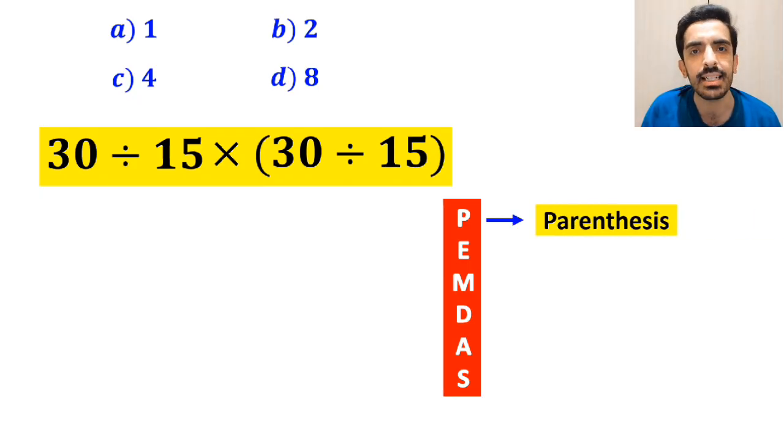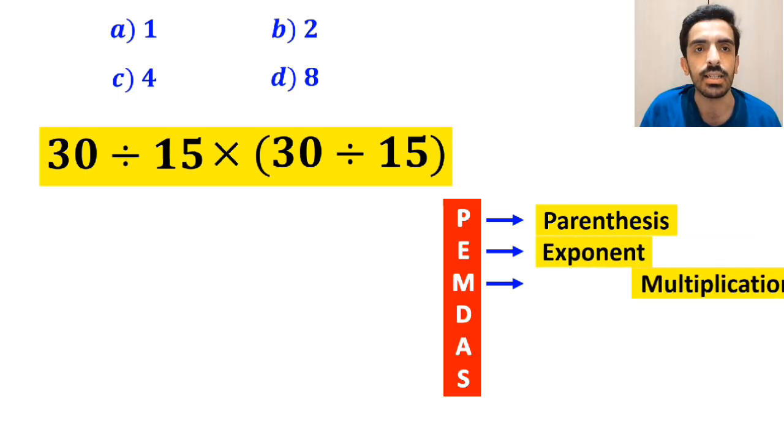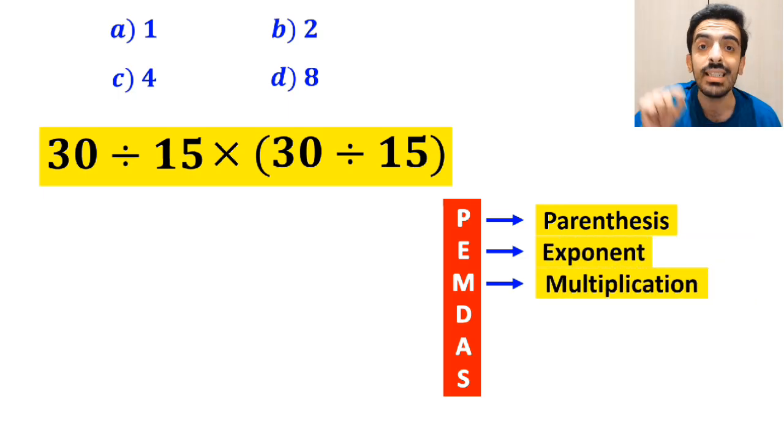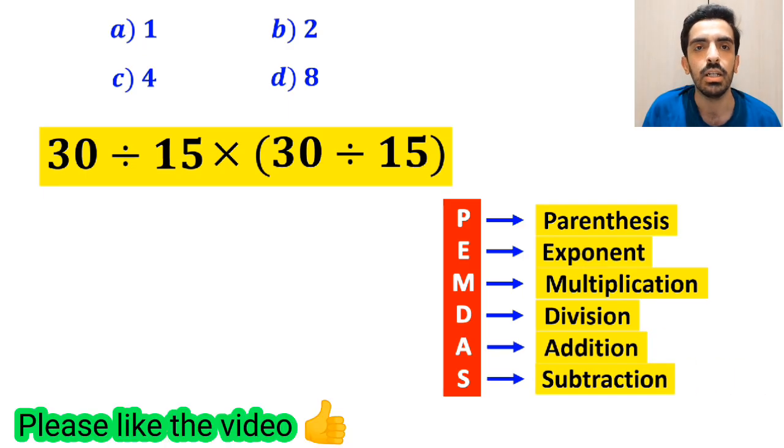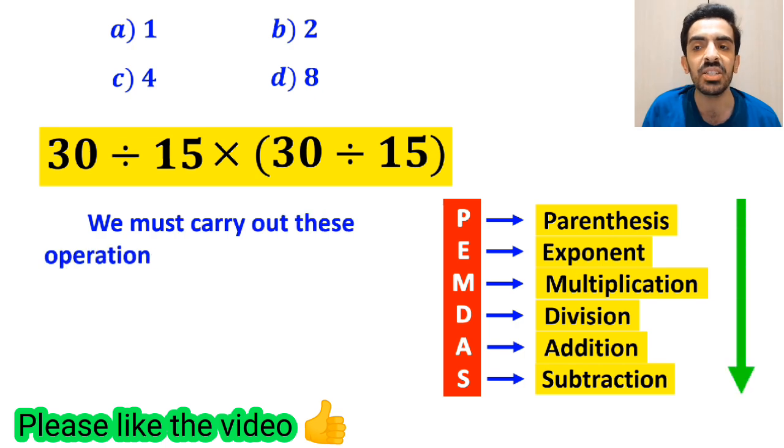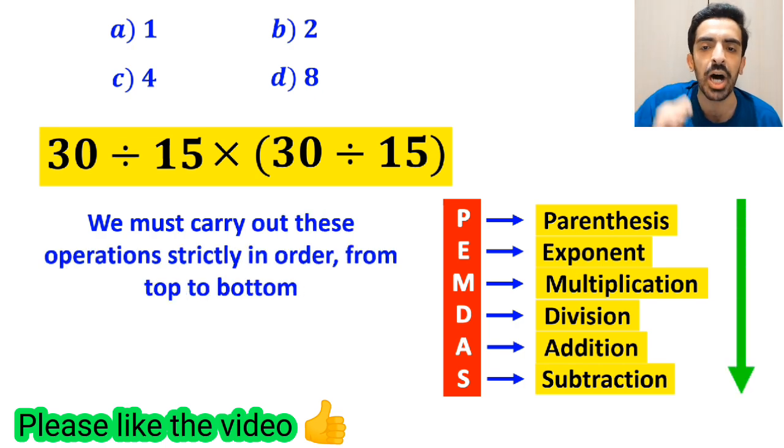P stands for parenthesis, E stands for exponent, M stands for multiplication, D stands for division, A stands for addition, and S stands for subtraction. We must carry out these operations strictly in order from top to bottom.